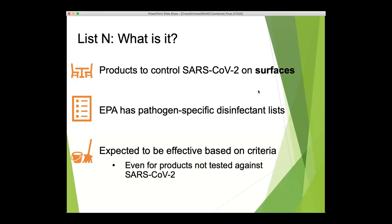There are several criteria for adding a product to List N. First, those roughly 80 products that actually have data showing they control SARS-CoV-2 on surfaces are included. Additionally, products that kill harder-to-kill viruses than SARS-CoV-2 get added to the list, because if a product controls something harder to kill, it should control SARS-CoV-2. Also, if a product is already registered for use against other human coronaviruses, it gets added. That's why there are over 500 products listed as expected to be effective against SARS-CoV-2.